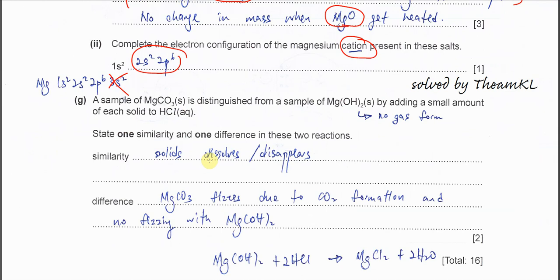Part G: A sample of magnesium carbonate is distinguished from a sample of magnesium hydroxide by adding a small amount of HCl. State one similarity and one difference between these two reactions. Very easy. As you can see in the question, both compounds are solid. When we add HCl, HCl will react with these two solids and these two solids will dissolve. Therefore the similarity is solid dissolves or disappears. This is what you can see during the reaction.